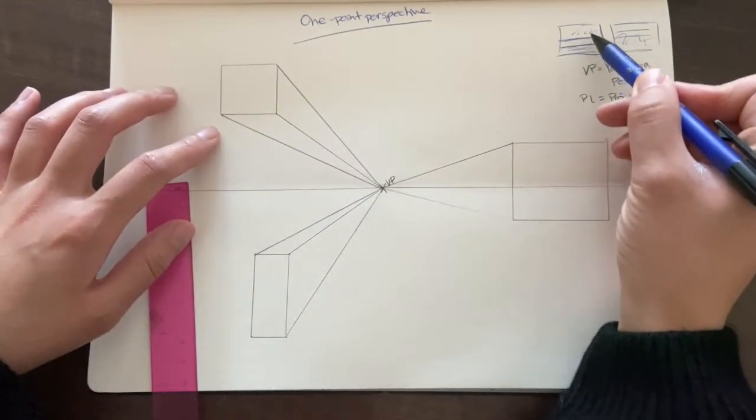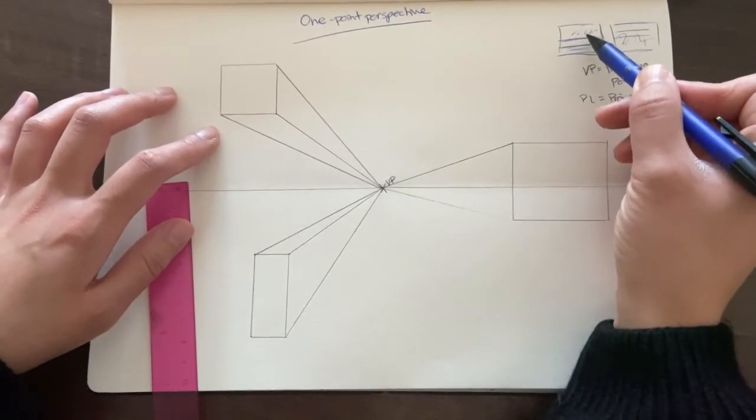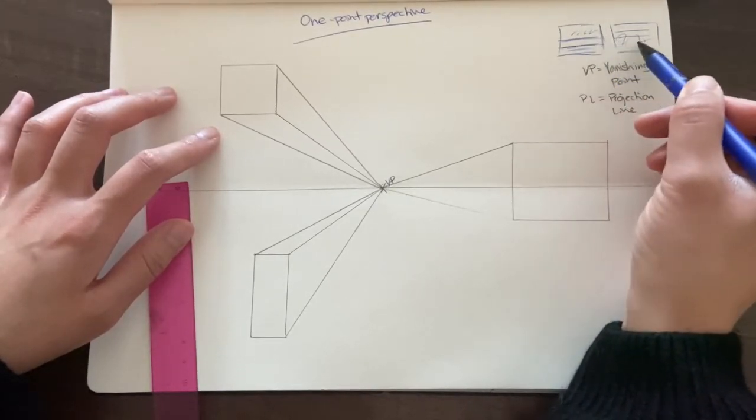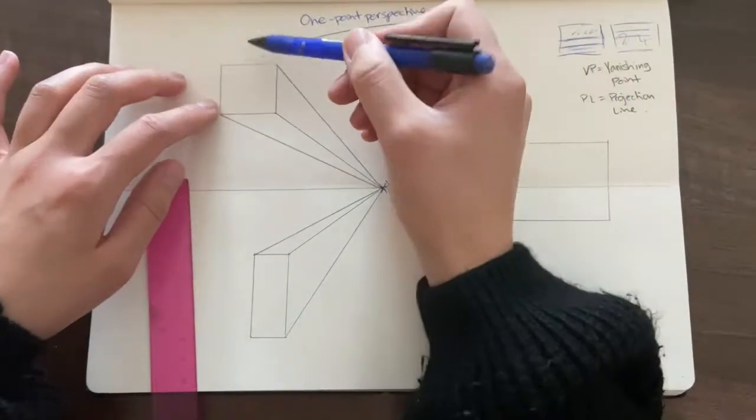And just remembering how, as a viewer, where's your point of view, when we were looking at this. So, for instance, this shape at the top, which is above the horizon line, we can see the shape along here.